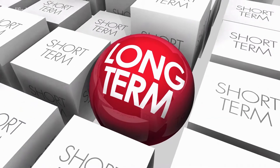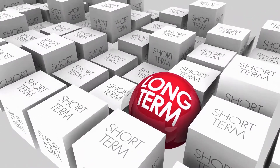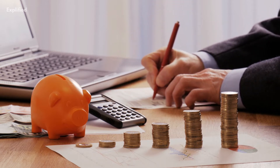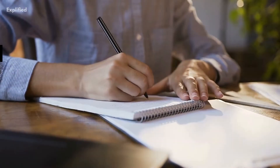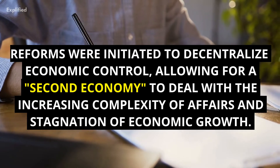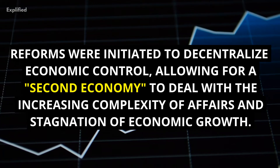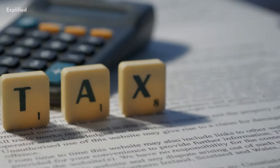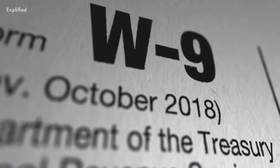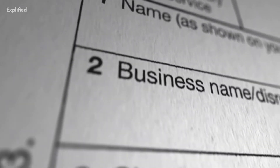Since the 1950s, the Soviets had been aware of the long-term problems of the socialist system. As the size and affairs of the economy grew, so did its complexity and the need for decentralization. Subsequently, reforms were initiated to decentralize economic control, allowing for a second economy to deal with the increasing complexity and stagnation of economic growth. These reforms, however, tore the root of the socialist institutions, and Khrushchev was forced to re-reform back to centralized control and coordination in the early 1960s.